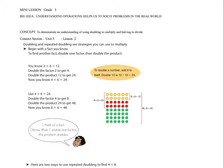All right, doubling and repeated doubling are strategies you can use to multiply. Begin with a fact you know. To find another fact, double one of those factors, which then doubles the product. For example, you know 2 times 6 is 12. If you were doubling the factor of 2 to 4, then by doubling the answer, you would get 4 times 6. If you know that 2 times 6 is 12, and you want to know what 4 times 6 is, you've doubled this, you've multiplied it by 2, then you double this. 12 doubled is 24. So, 2 times 6 is 12. Two groups of that is going to be 24. So, 4 times 6 is 24.